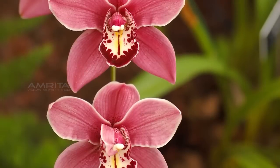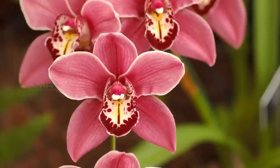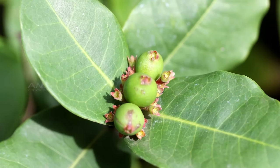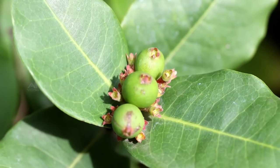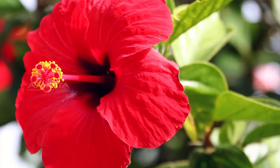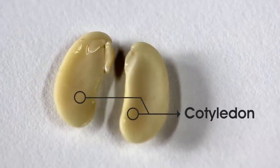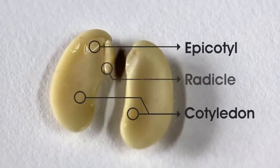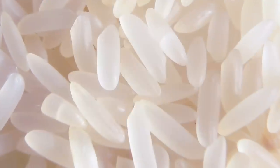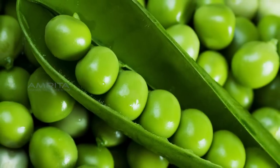Traditionally, flowering plants have been divided into two major groups or classes on the basis of the number of cotyledons present in the seed. These two groups are the monocots and dicots. A cotyledon is a central portion of a seed embryo to which the epicotyl and radicle are attached. Plants that are monocots have one cotyledon and dicots have two cotyledons.